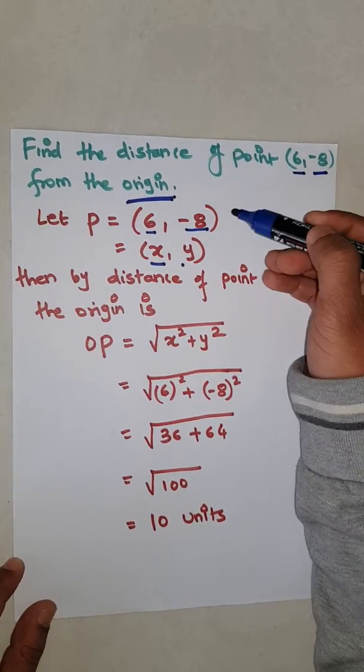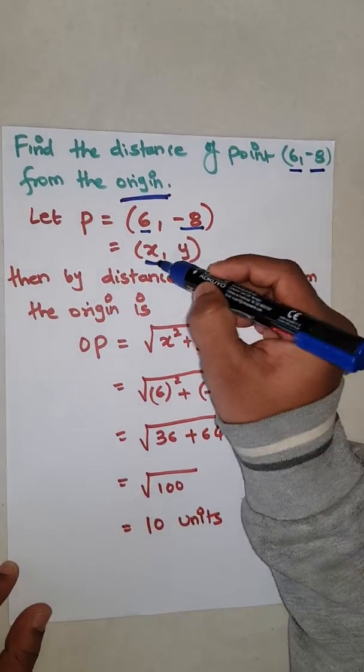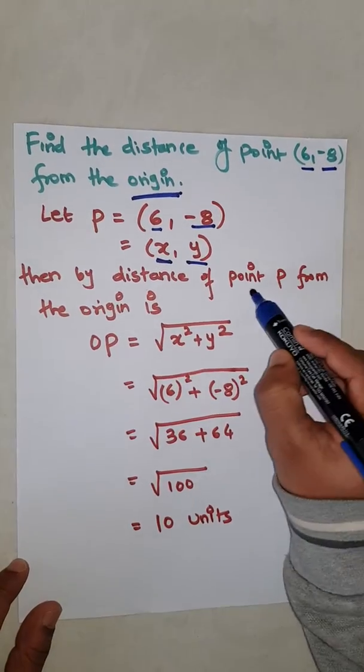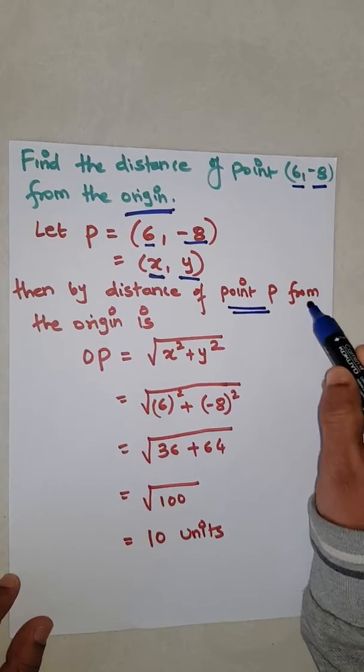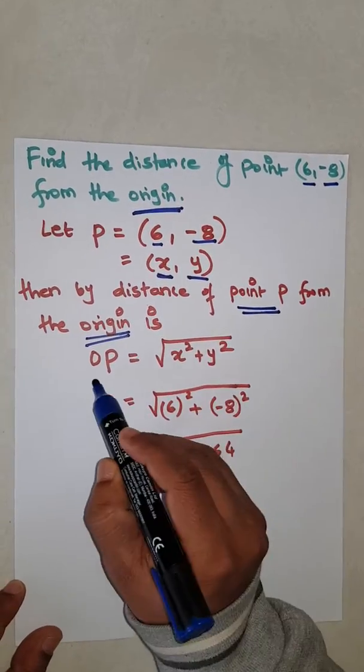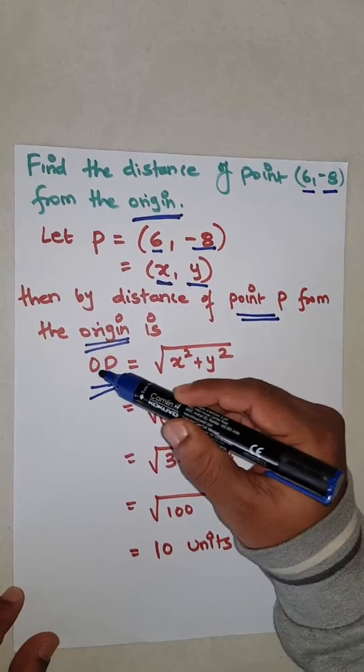Six comma minus eight - it can be x and y. Then the distance of point P from origin, that is zero comma zero, we can write as OP, like origin and then point P.